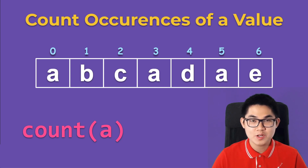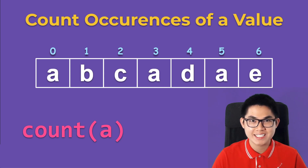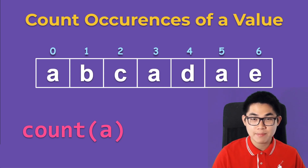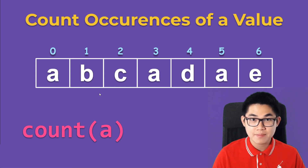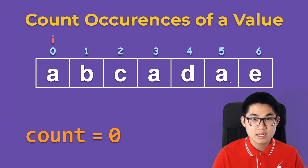In this video I'm going to show you how to count the number of times something occurs inside an array or a string. Let's say we want to count the number of times the letter A occurs inside this array. The first step is to have a variable called count and set it to zero. The second step is to traverse through the array starting at index zero.